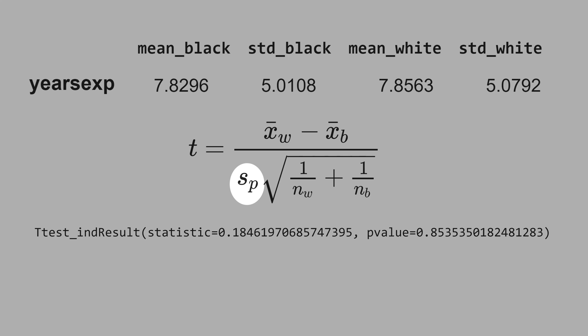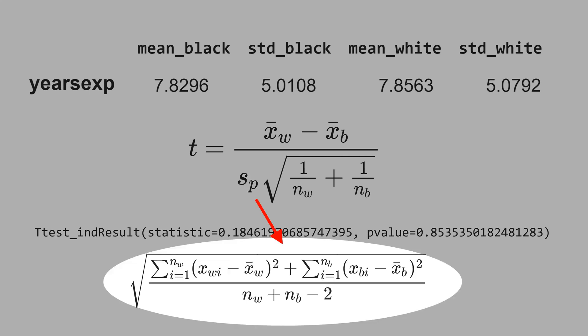For the more technically-inclined mindset, this sp here is the pooled standard deviation, and is given by this formula here. It is pooled because it's combining the variance of white and the variance of black.